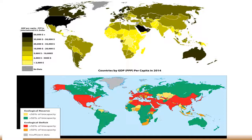Interestingly enough, Australia has a high GDP between $35,000 to $50,000, yet it is in an ecological surplus. So they have a good economy and they're doing well in terms of protecting the environment — it's a good figure to do some comparisons. Russia also has a high GDP in the range of $20,000 to $35,000 per capita, and they too are considered to be in a surplus. Canada is in the same boat.